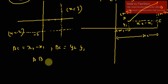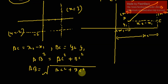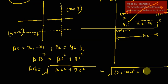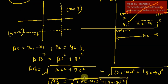We need to find the distance AB. By the Pythagorean theorem, AB² equals AC² plus BC². Therefore AB equals the square root of (AC² plus BC²), which equals the square root of (x2 minus x1)² plus (y2 minus y1)². This is the distance formula: if you have the coordinates of two points, the distance between them is the square root of (x2 minus x1)² plus (y2 minus y1)².